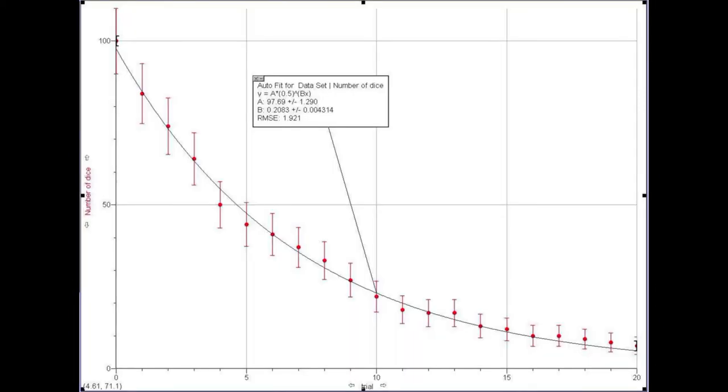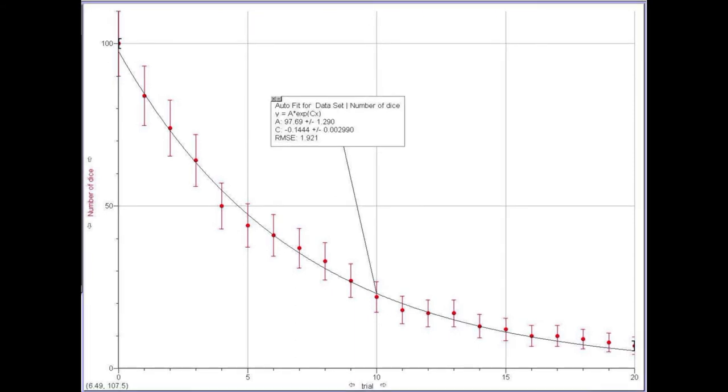Plot the number of dice versus trial number and fit 0.5 raised to the b times x to get the half-life from the inverse of b. Fit an exponential to the same data to get the decay constant.